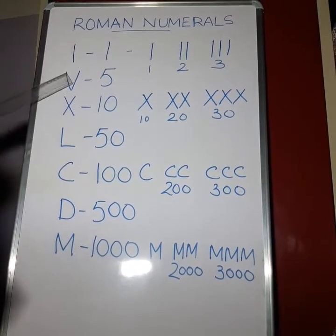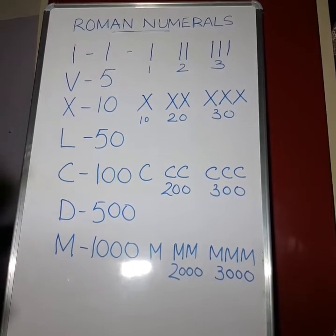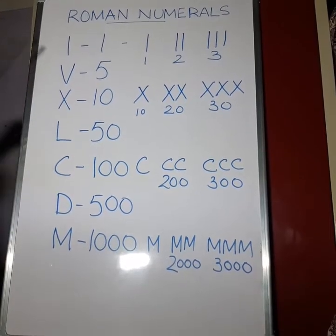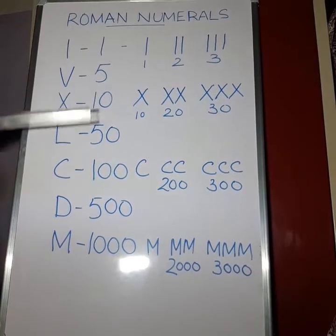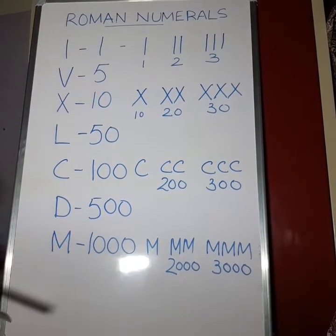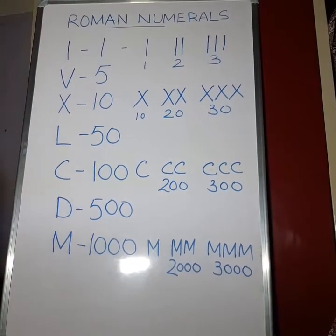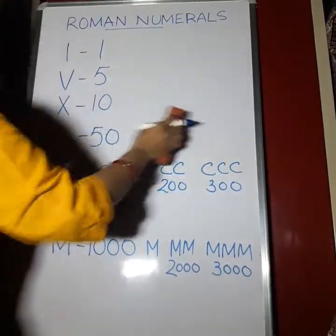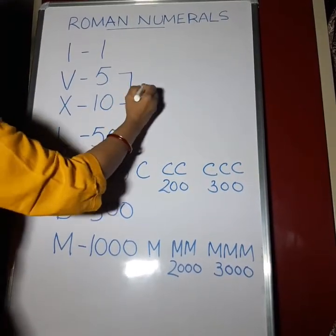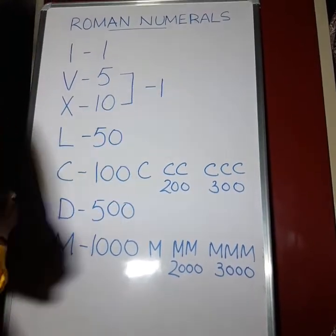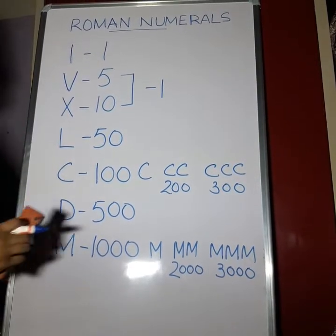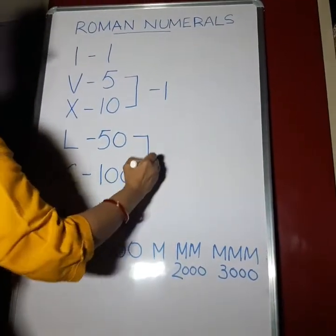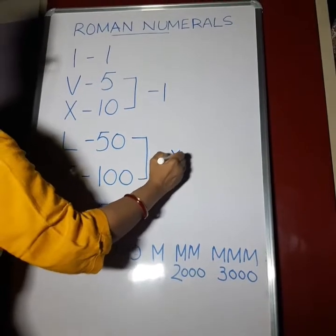The symbols for 5, 50, and 500 cannot be repeated. Now, 1, 10, 100, and 1000 can also be subtracted. The rule is: I can be subtracted from 5 and 10 only, and 10 can be subtracted from the two greater numbers — 50 and 100.